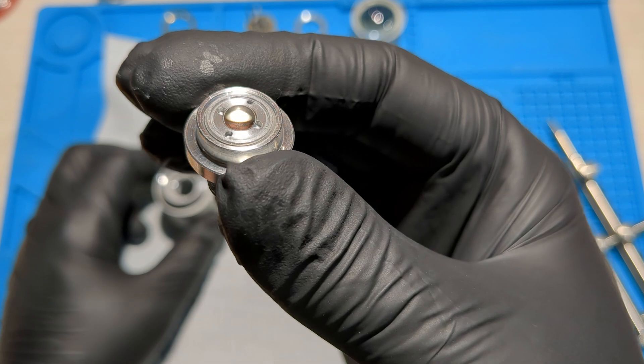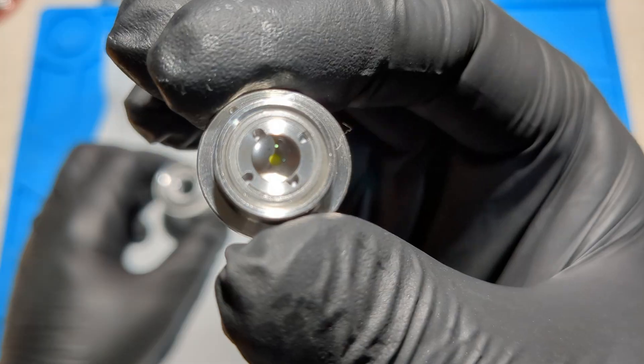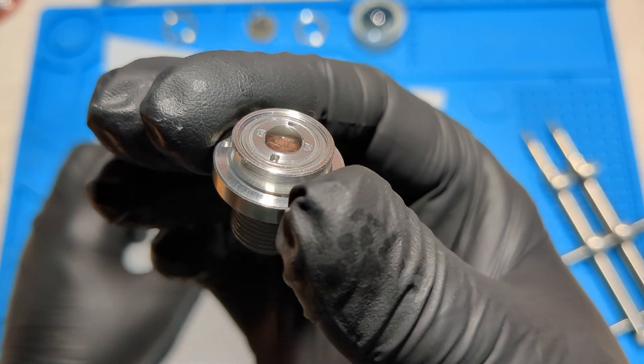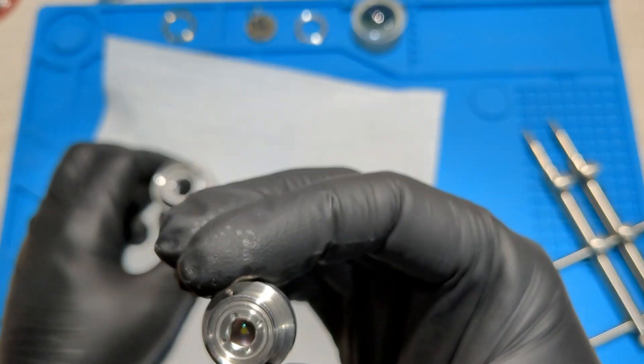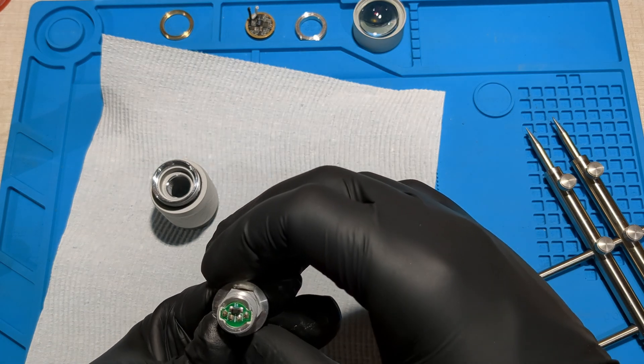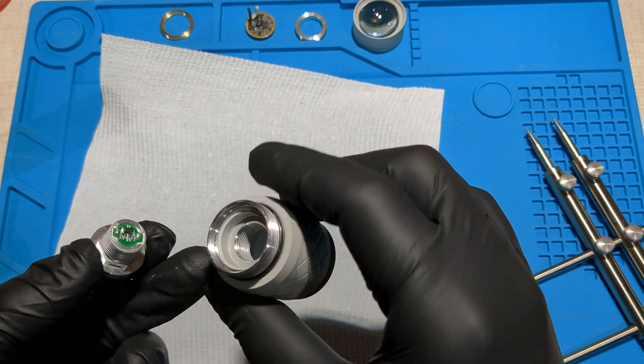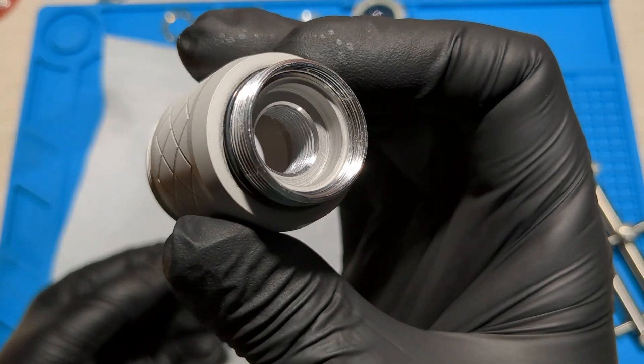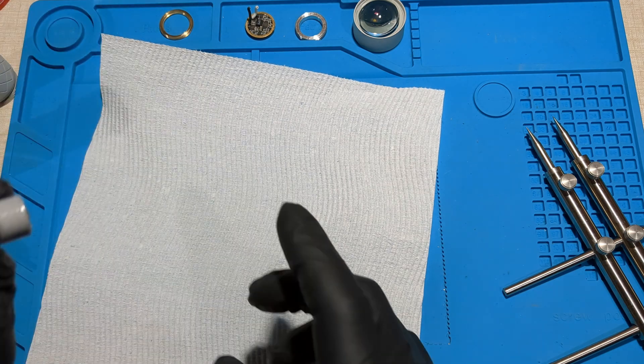So that's the laser excited phosphor module. It actually pokes up a little bit. I thought this was a flat module and it went down, but it looks like it's poking up a bit. That is awesome. That is the module. Heaps of thermal paste on the inside. I'm going to go ahead and clean this off as well.